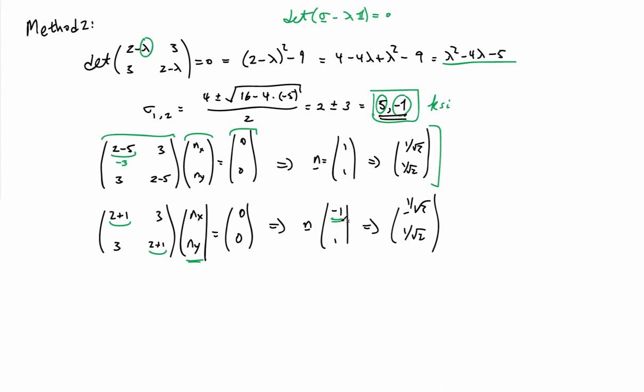I could pick, for example, minus 1, 1, and again, normalizing it, I get minus 1 over root 2 and 1 over root 2 here for the components.